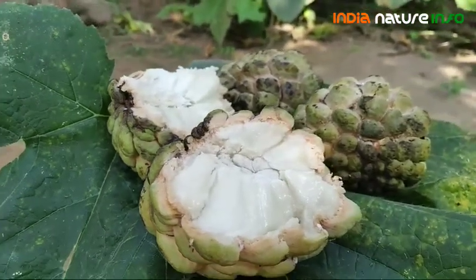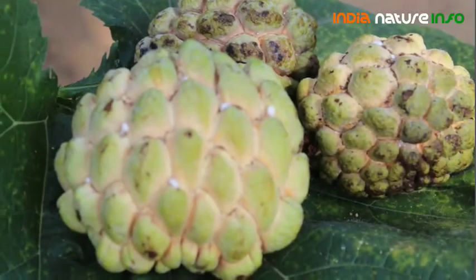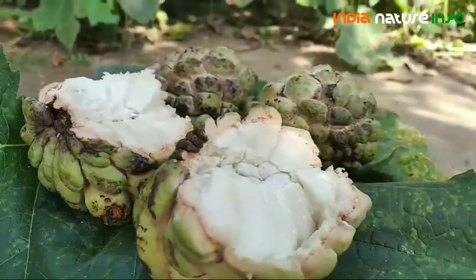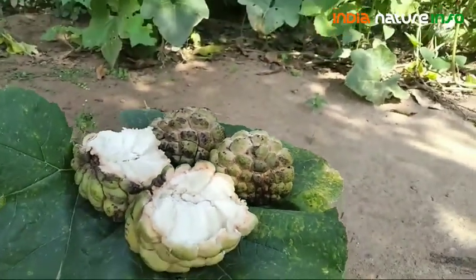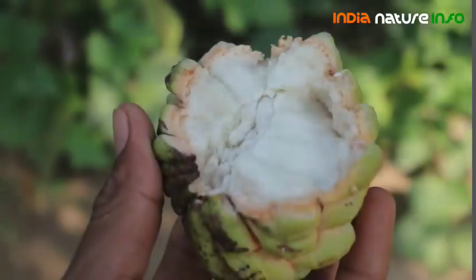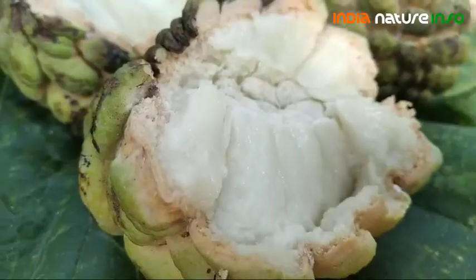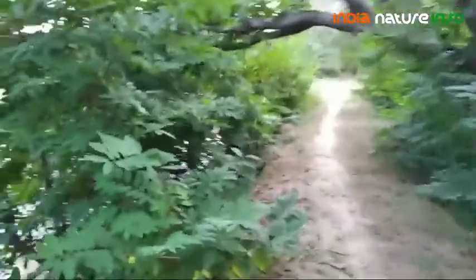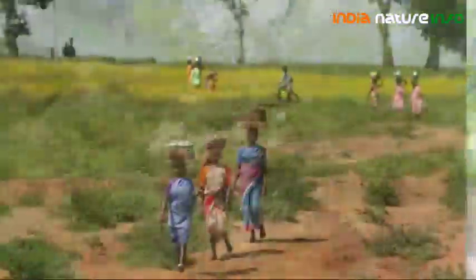Today we are going to know about sitafal. Sitafal is an Indian word and custard apple is the English word. Welcome to my Indian Nature Info YouTube channel. Sitafal is a fruit found mostly in the state of Chhattisgarh in India. This is the sitafal tree — these trees are small and found very much in Chhattisgarh villages.